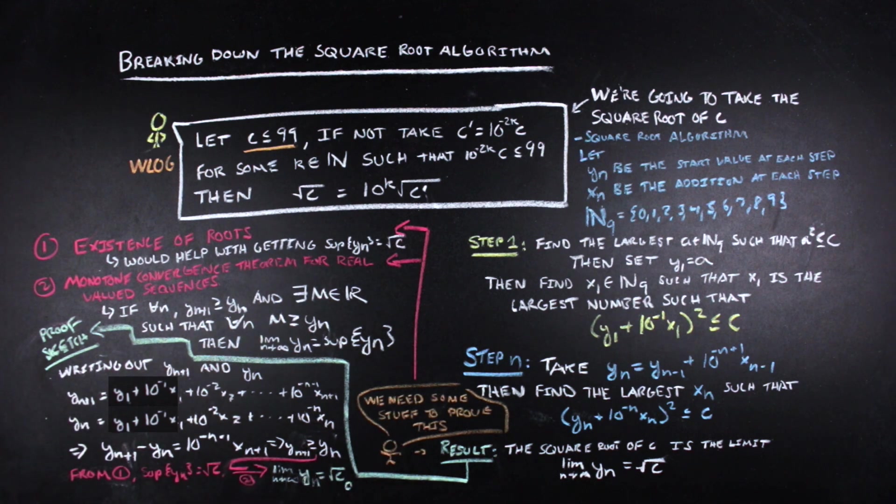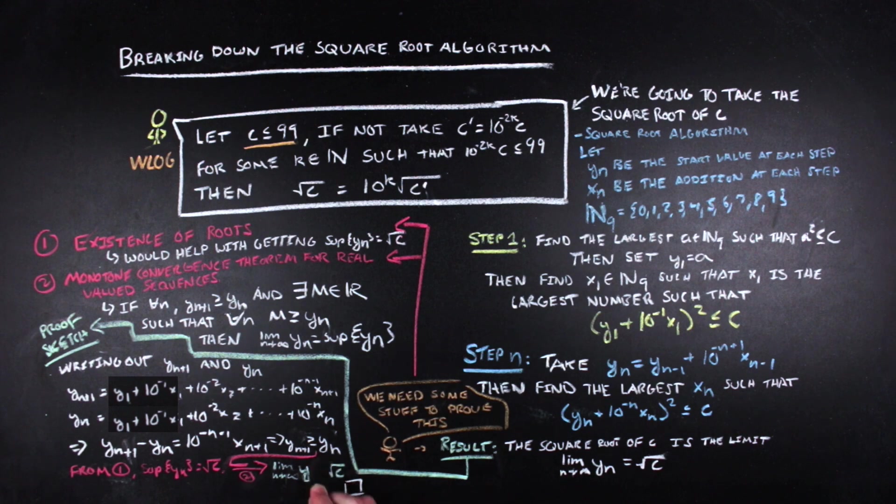And this completes the sketch of the proof that the algorithm actually calculates the square root of c if you let it run to infinity. Now, at this point, you might be wondering how that weird setup and long square root thing actually reflects this algorithm that we just talked about. So we're going to go through that.